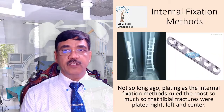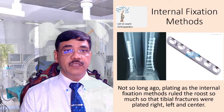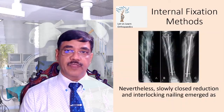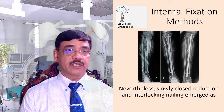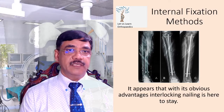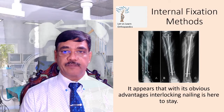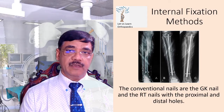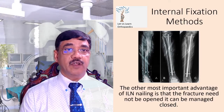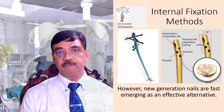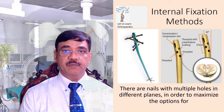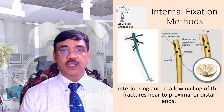Regarding internal fixation: not long ago, plating ruled as the method for tibial fractures. Slowly, closed reduction and interlocking nailing emerged as the gold standard and pushed plating into oblivion. Interlocking nailing is here to stay with its obvious advantages. The conventional nails are the GK nail and RT nails with proximal and distal holes. The most important advantage of interlocking nailing is that the fracture need not be opened and can be managed by closed technique.